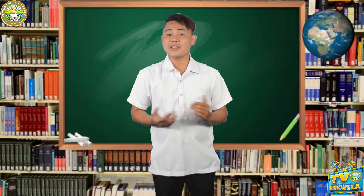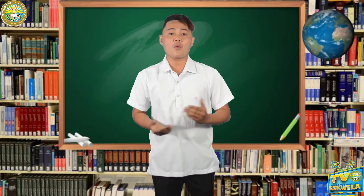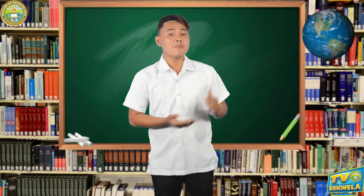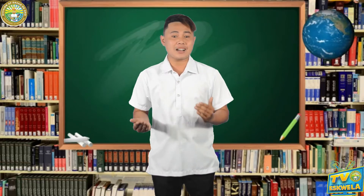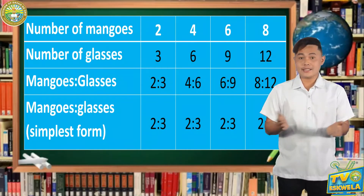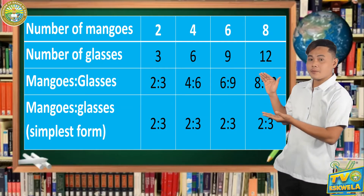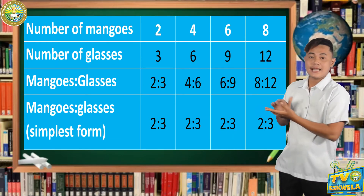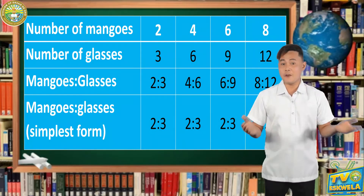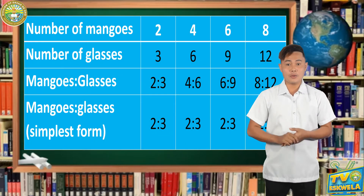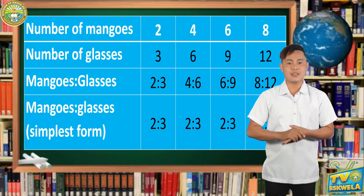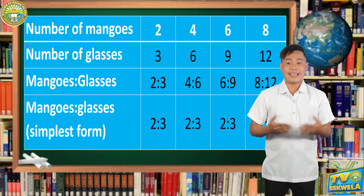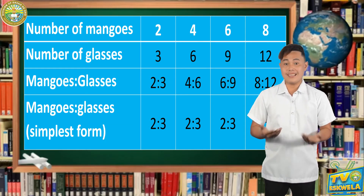Did you know that we can use another way to find the answer? We can use a table to show mother's guide in preparing batches of mango shake. In this table, we have the number of mangoes, the number of glasses, the ratio of mangoes to glasses, and in simplest form. First, in every 2 mangoes, we can produce 3 glasses of mango shake. The ratio is 2 is to 3. In simplest form, we have 2 is to 3.